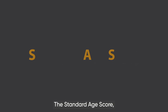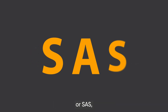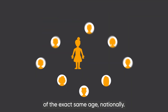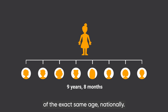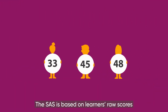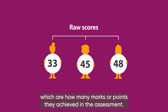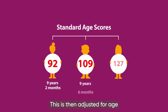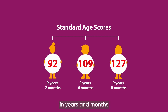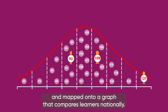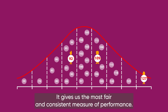The Standard Age Score, or SAS, compares a learner's performance to others of the exact same age nationally. The SAS is based on learners' raw scores, which are how many marks or points they achieved in the assessment. This is then adjusted for age, in years and months, and mapped onto a graph that compares learners nationally. It gives us the most fair and consistent measure of performance.